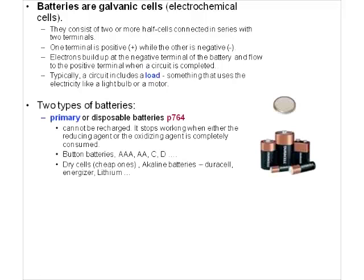The first type of battery is called a primary battery — you might consider these disposable. Primary means one use: we use them one time only, and they cannot be recharged. When the reactants are consumed — either the reducing agent or the oxidizing agent is completely used up — the battery stops and cannot be reversed.